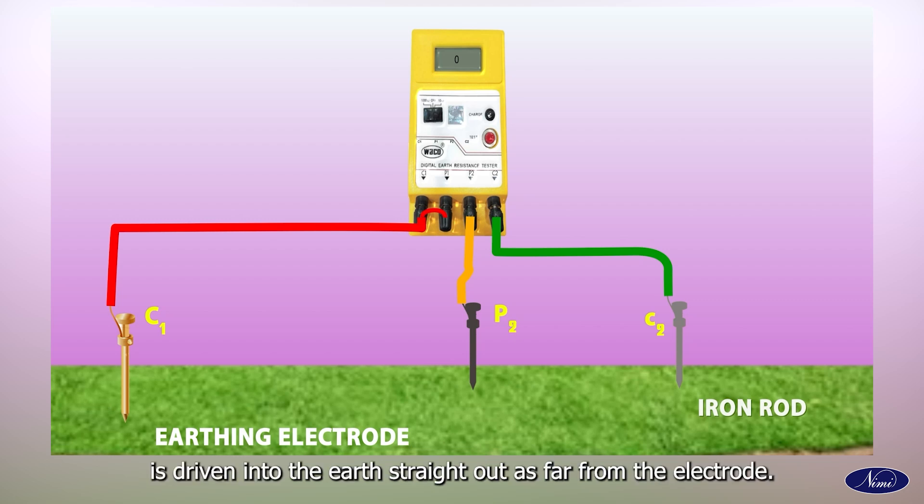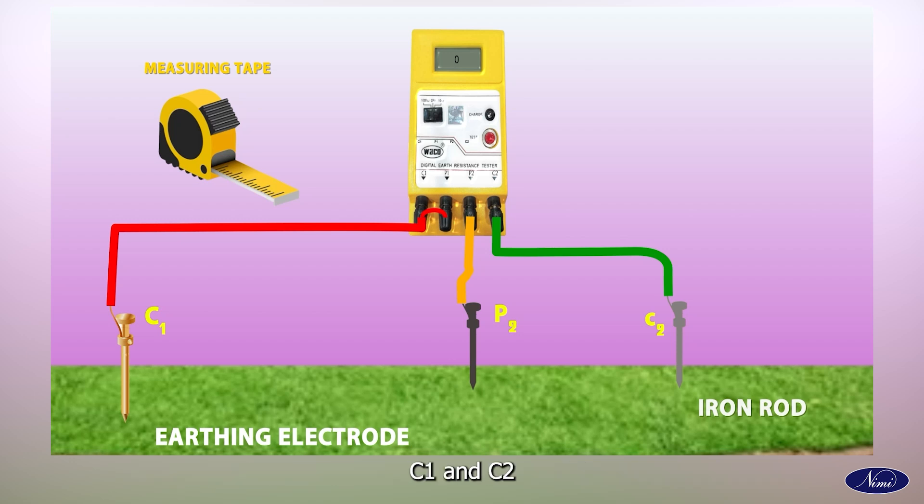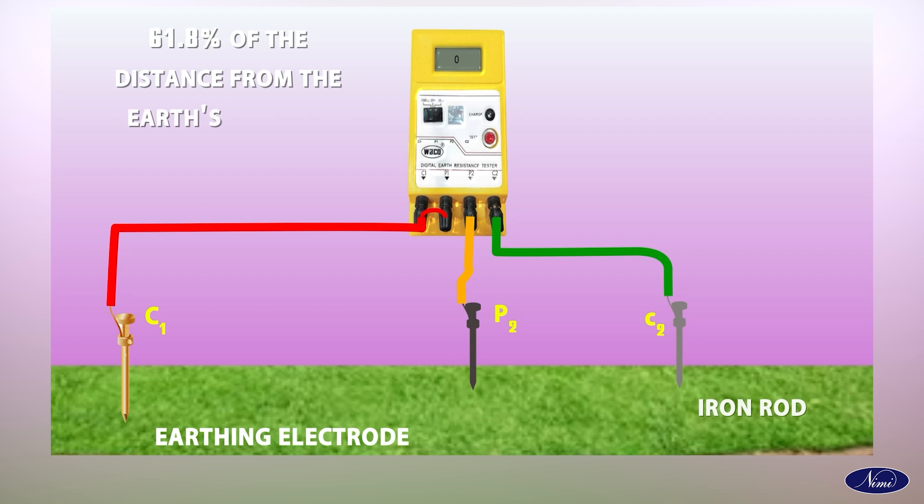Now the C2 reference rod is driven into the earth straight out as far from the electrode C1 under test as possible. Potential reference P2 is then driven into the earth at a set number of points roughly on a straight line between C1 and C2. Use a measuring tape to determine the distance between points C1 and C2. Place the potential electrode P2 61.8% of the distance from the earth's current electrode C1.